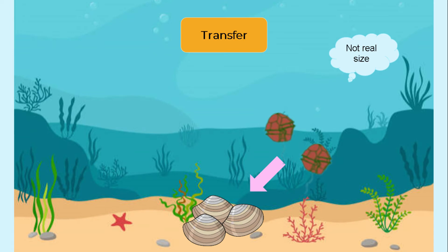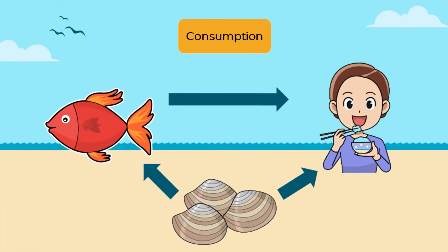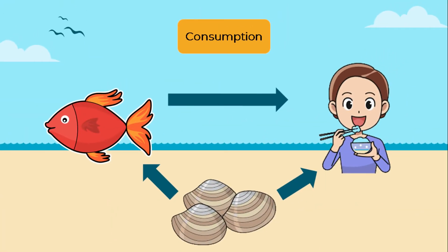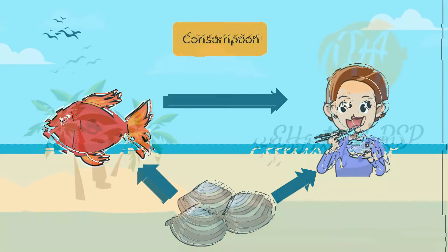Shellfish on the ocean bed will then filter water to feed, trapping the dinoflagellates inside them. Shellfish are either consumed by humans directly, or humans consume the fish that preyed on the shellfish.